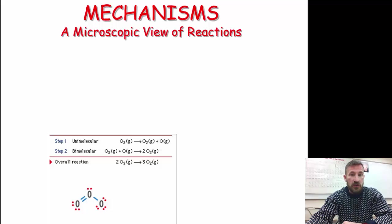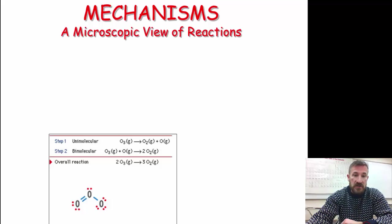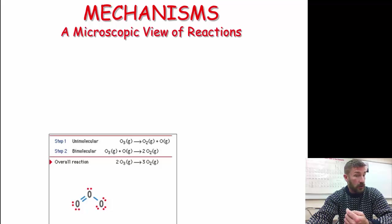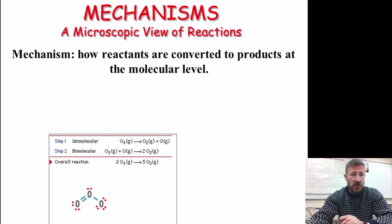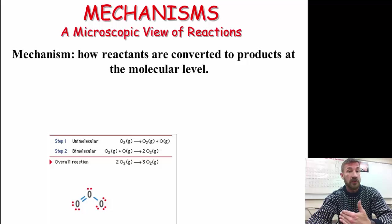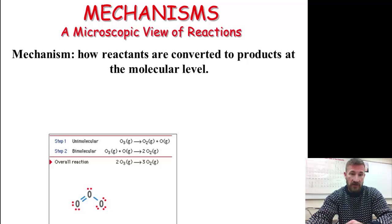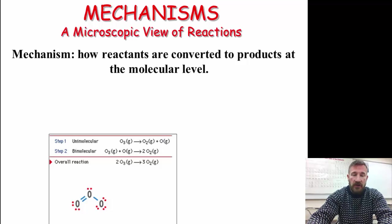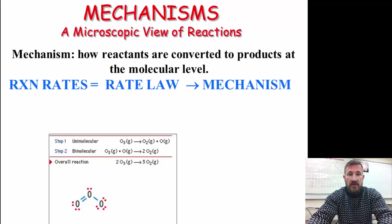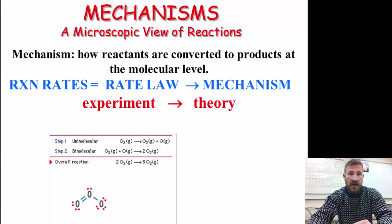And last thing we're going to do is look at some mechanisms that are important for the reactions to occur. So mechanisms are how reactants are converted to products at the molecular level. So we see we have a unimolecular and biomolecular process and rate laws are important, but also the mechanism is important for reaction. So this is how the experiment goes with theory.